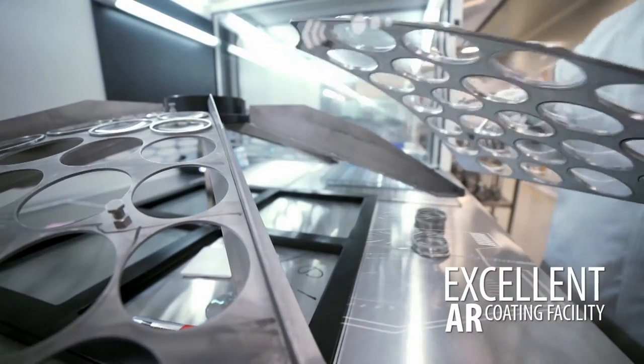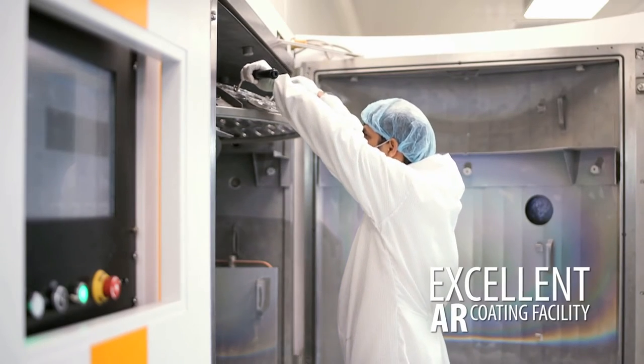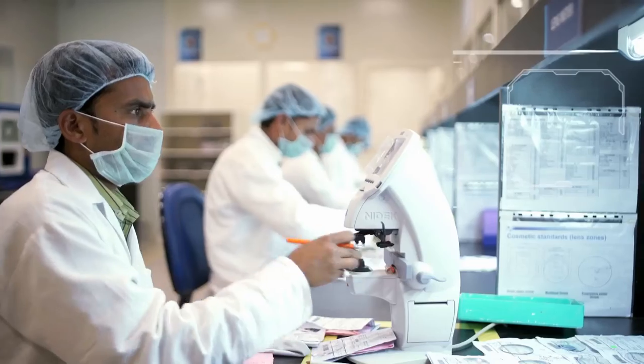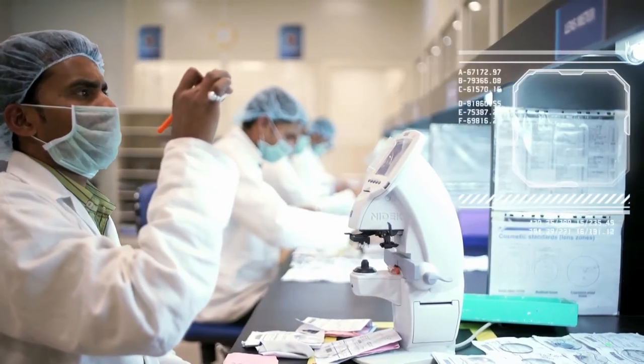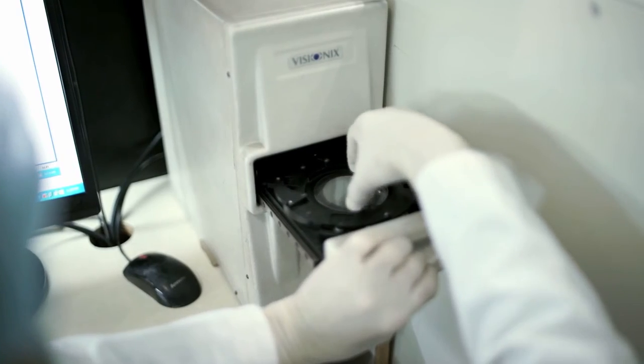Followed by assortment for anti-reflection coating in advanced machinery under sterile and controlled atmosphere. Following anti-reflection coating, the lenses undergo final quality check. Vision RX Lab exercises tight quality control at each step.